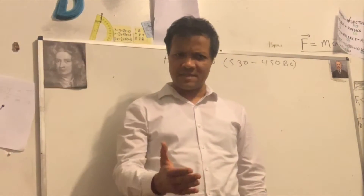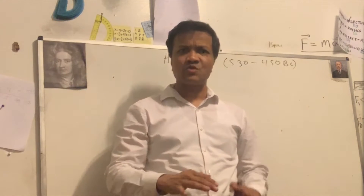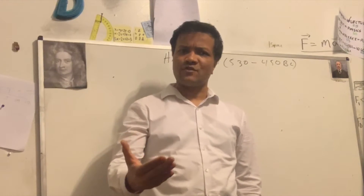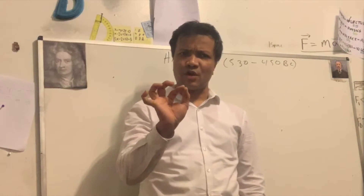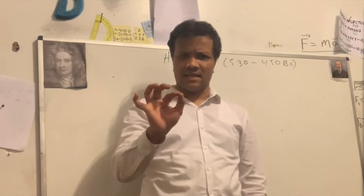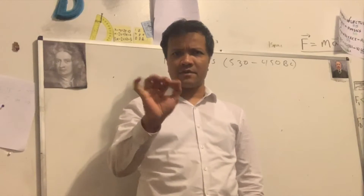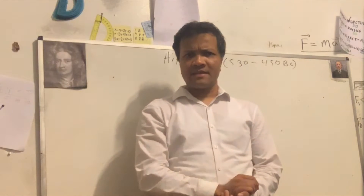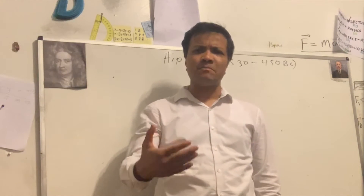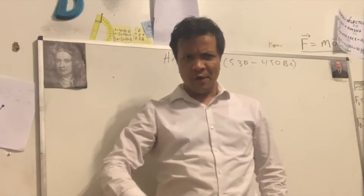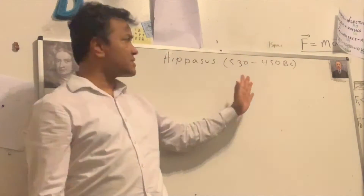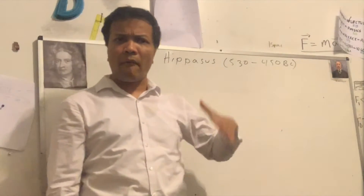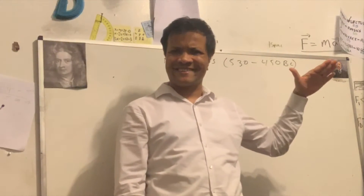The contribution he made in mathematics is great. Today I'm going to tell you about his contribution. He was the first man in the history of mathematics who was killed because of mathematics. How did he get killed? Why did they kill him? They killed him because he invented irrational numbers. Because at that time, this is the pre-Socratic time.